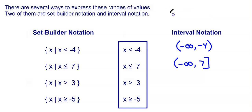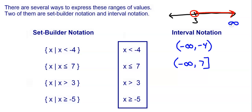For x is greater than 3, shade to the right with an open circle on 3 because it's not equal to. Going to the right means going to positive infinity. The smallest number is 3 and the largest is positive infinity. Infinity always gets a parenthesis, and because it's an open circle and not equal to, 3 also gets a parenthesis: (3, +∞).